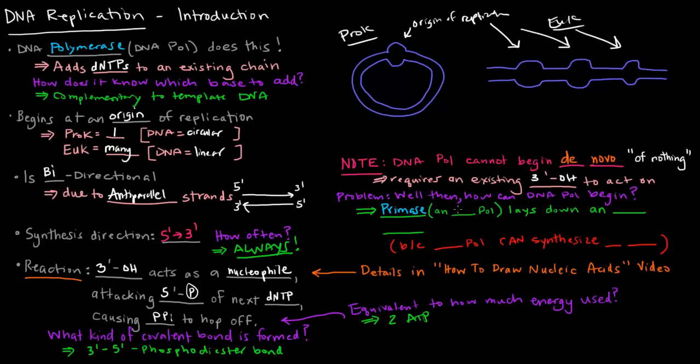Primase is an RNA polymerase, a special RNA polymerase, and it lays down this thing called a primer. It's an RNA primer, which is basically just a small strand of RNA. And what that RNA primer does is it provides the 3' OH for DNA polymerase to act on.